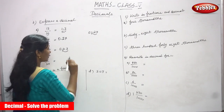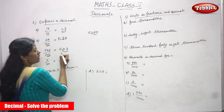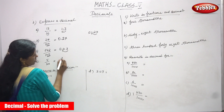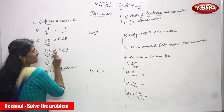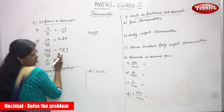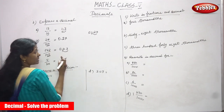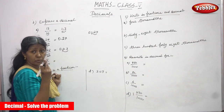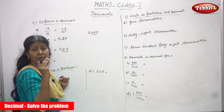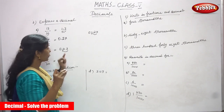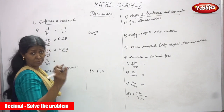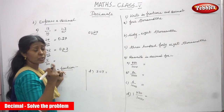Moving from right to left, you have to move only 2 digits. After 2 digits from the right, you put the point. So the answer is 8.43.